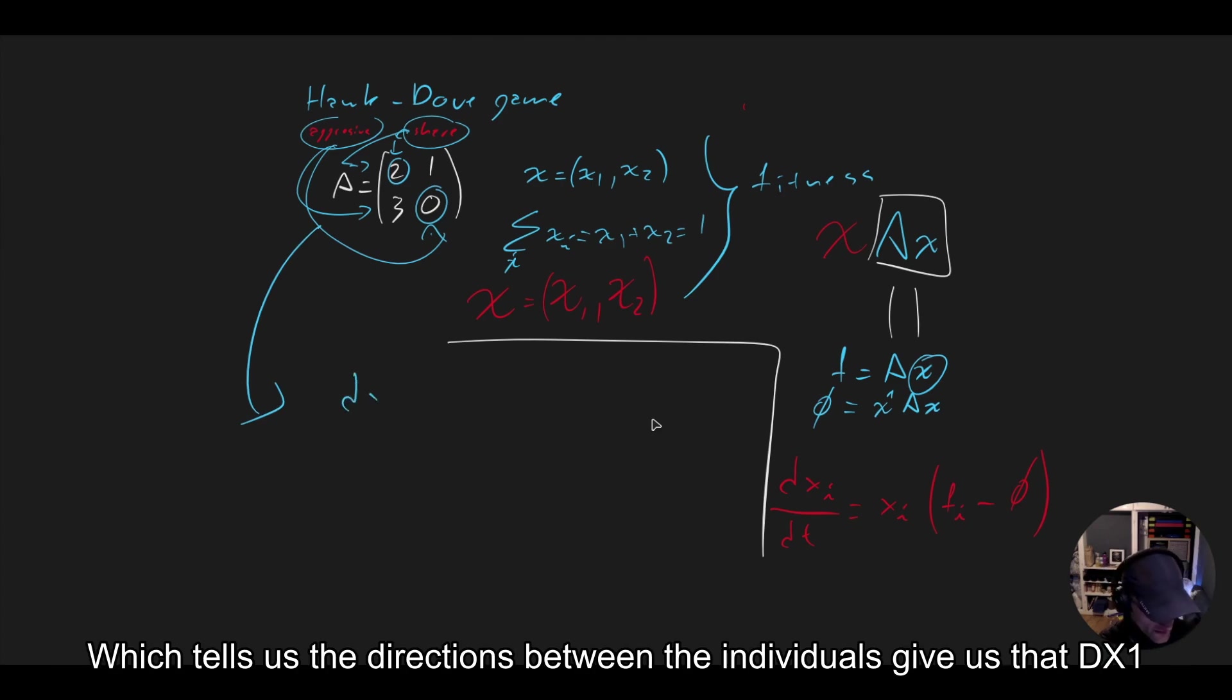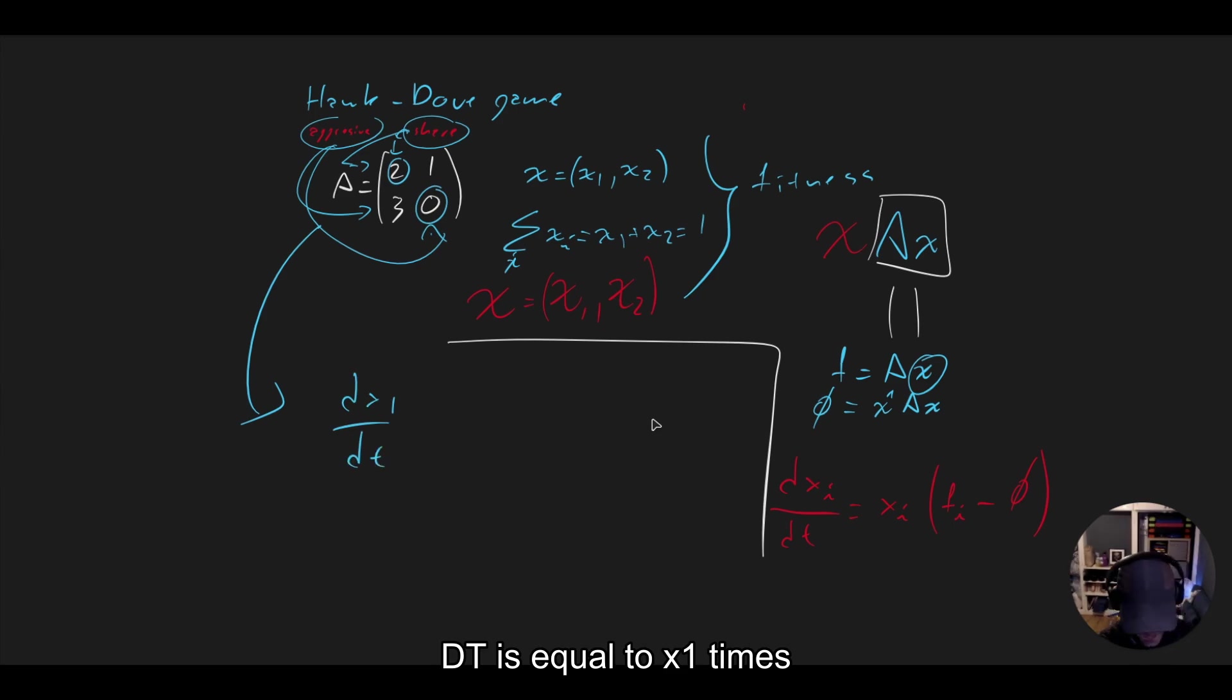Give us that dx1 dt is equal to x1 times 2x1 plus x2 minus phi. And dx2 dt is equal to x2 times 3x1 minus phi.